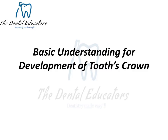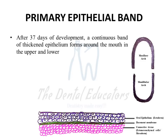Initially when we start discussing about the development of the tooth's crown, we need to know what structures are basically involved. The first structure in the development of the crown is basically the primary epithelial band. At the 37th day of gestation, we see a continuous thickened epithelium forming around the upper and lower arch — a U-shaped or horseshoe-shaped band.